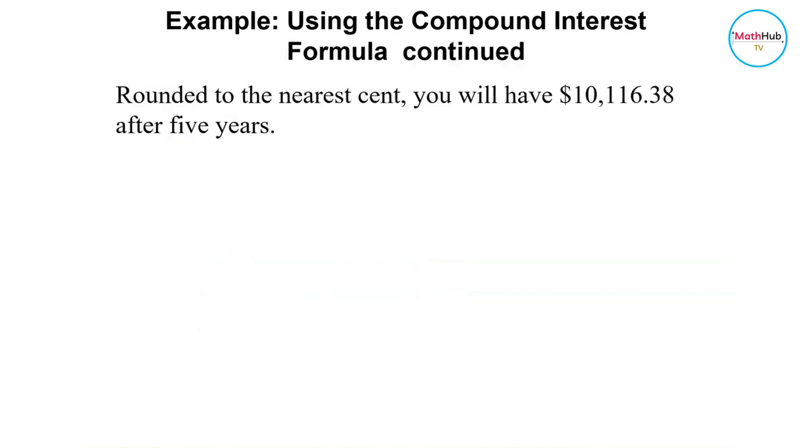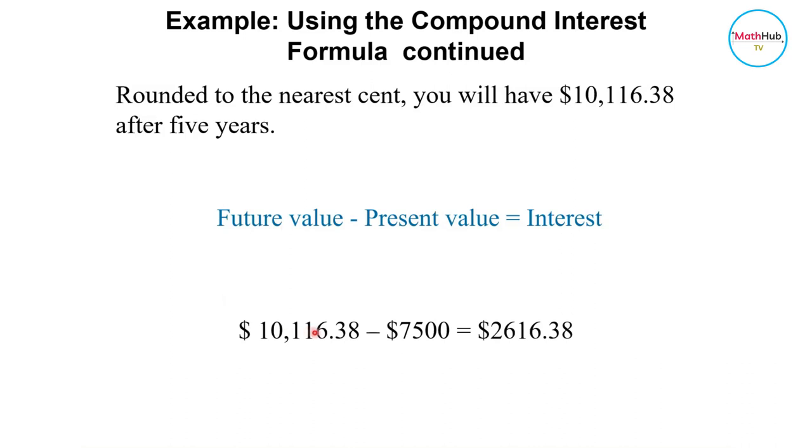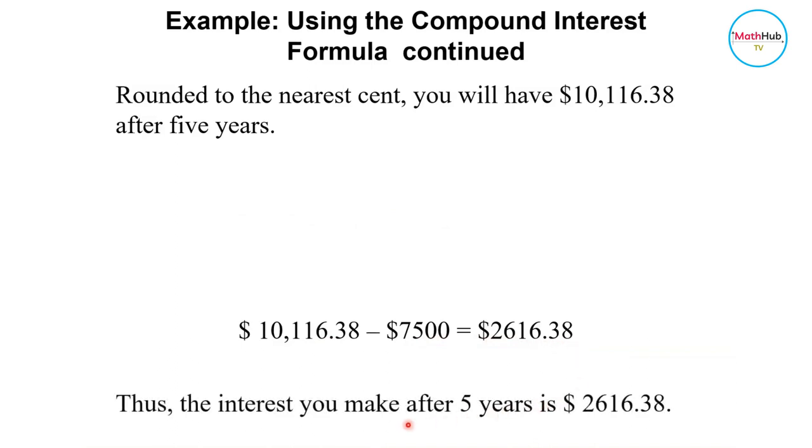And to obtain the interest amount, subtract or find the difference between the money in the account after 5 years, and that is 10,116, and then you subtract 7,500. This is the amount of money at the beginning. 10,116.38 minus 7,500 is equal to 2,616.38. This is the interest you make after 5 years.